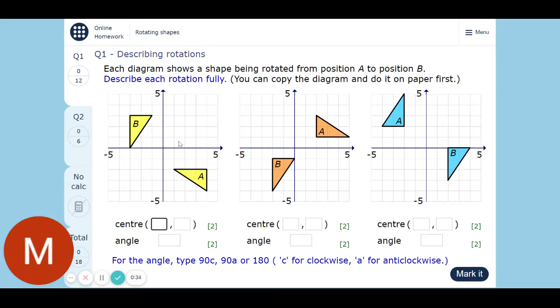Okay, so let's look at what we got. I'm not going to actually do these because you need tracing paper to do it, but I'm going to tell you how to do it. Each diagram shows the shape being rotated from position A to position B. Describe the rotation fully. We need three things: the center, the angle, and the direction. They give you two boxes, one for the coordinates for the center and one for the angle, but you're meant to put C or A in there to say clockwise or anti-clockwise.